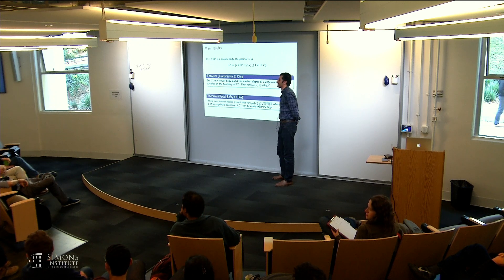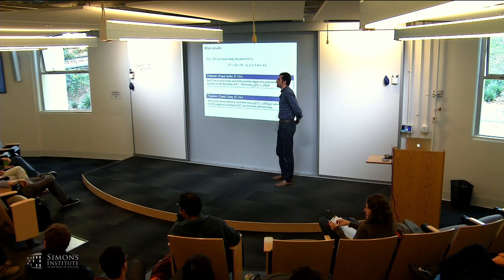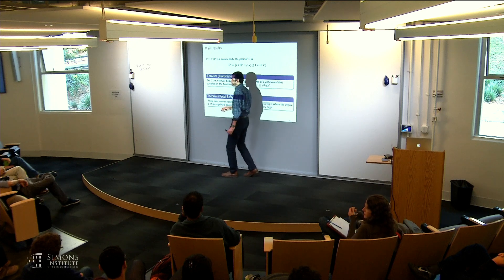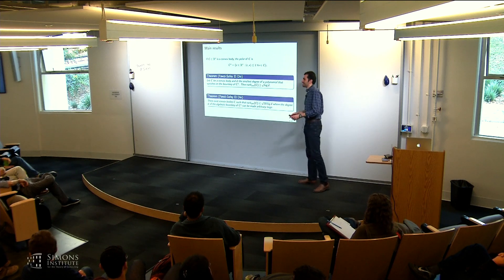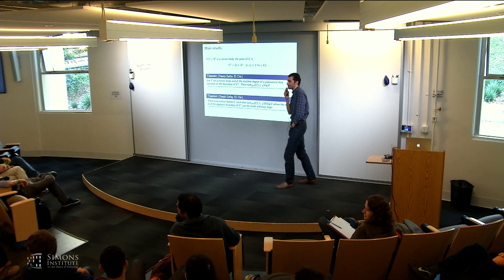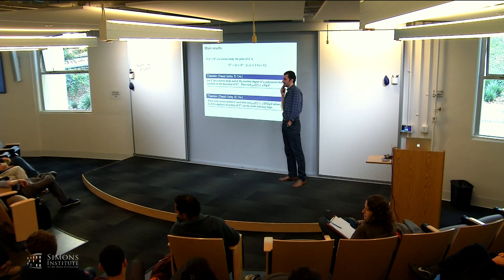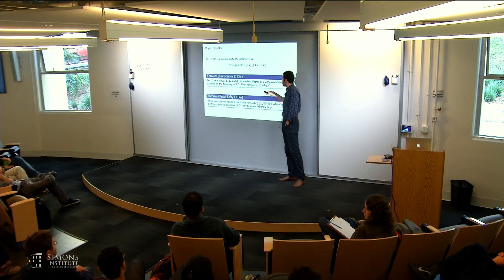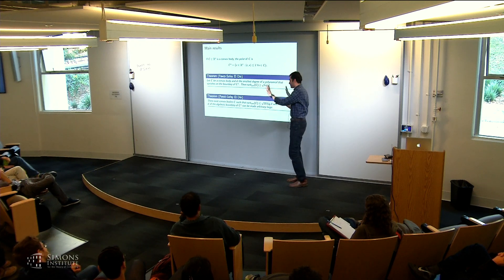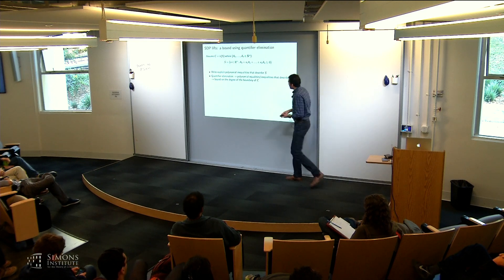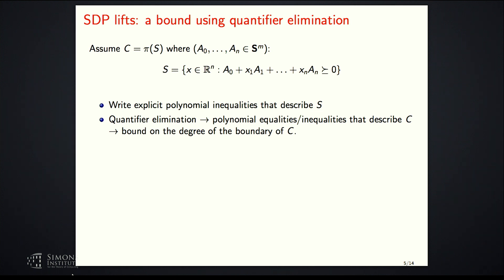To clarify: the polynomial just has to vanish on the boundary — it doesn't matter if it also vanishes inside or outside. The algebraic degree for C and the polar need not be the same, so you could take the max. For a spectrahedron defined using a matrix of size M, the polynomial that vanishes on the boundary is the determinant, which has degree M. But in general, the boundary of the polar of such a spectrahedron will have a much larger degree.